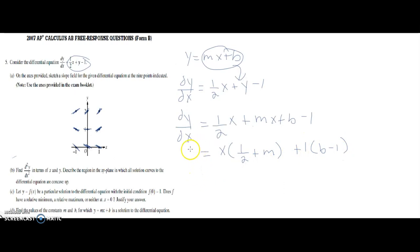Now, if you tested the initial condition given to zero, one, we know that the slope equaled zero. So we could take the zero and we could plug it in here. So now we have x times one-half plus m.